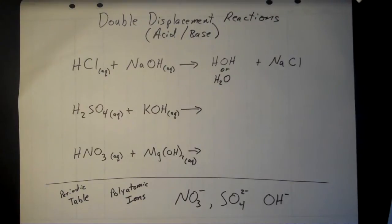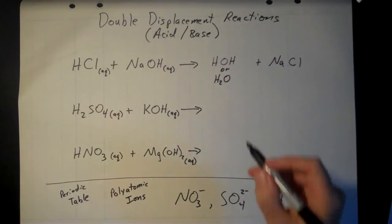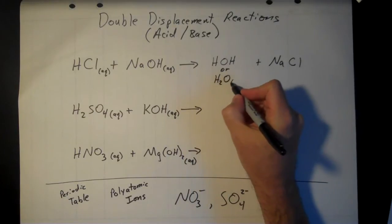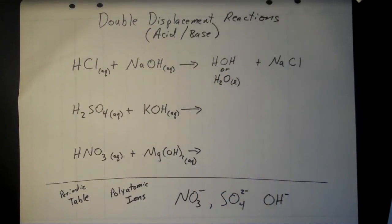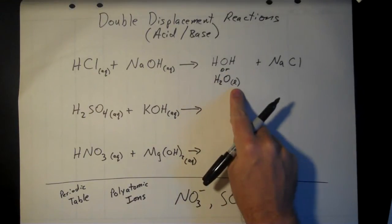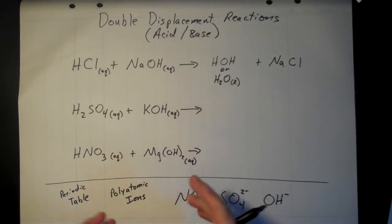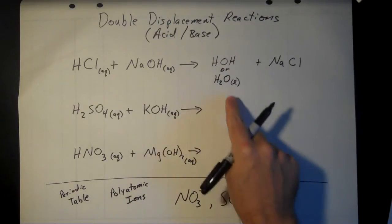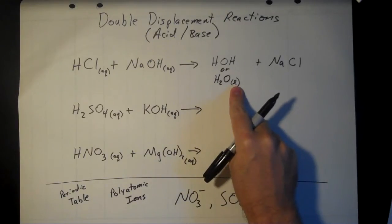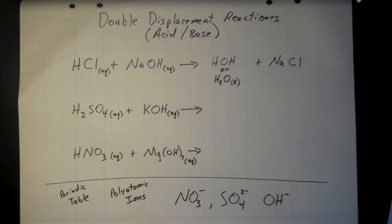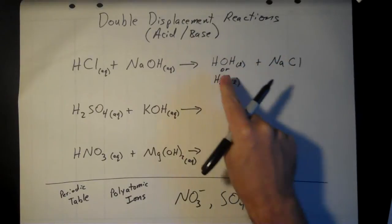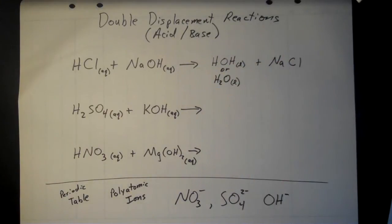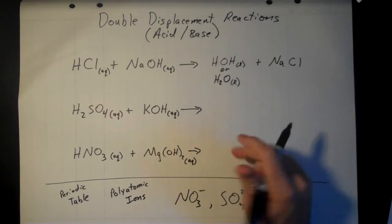Unlike precipitation reactions, you won't typically find a solid as one of your products. Instead, one of your products is usually going to be water. We don't write it as AQ — aqueous water is water dissolved in water, it's all just water. We put a little L behind it to indicate that it's a liquid. You can leave it as HOH or as H₂O, either is fine.